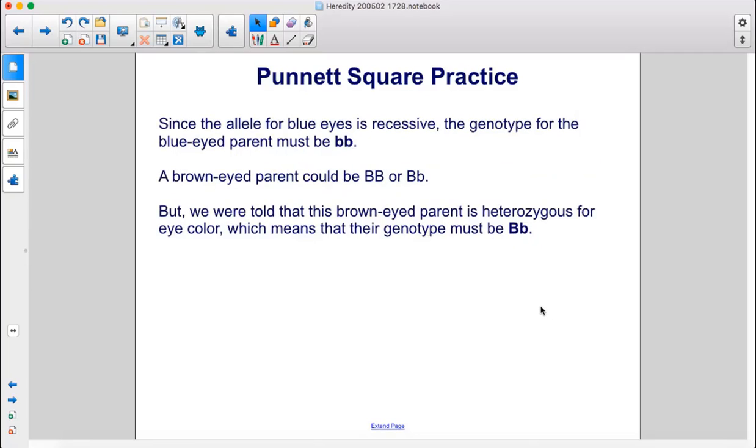Since the allele for blue eyes is recessive, the genotype for the blue-eyed parent must be two lowercase b's. A brown-eyed parent could be two uppercase B's or an uppercase and a lowercase b. But we were told that this brown-eyed parent is heterozygous for eye color, which means that their genotype must be capital B, lowercase b.